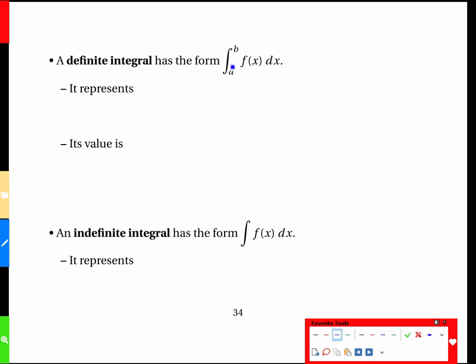So the definite integral has the form with the limits here, that's important, the a and the b, and it represents an area between x equals a and x equals b, or it represents an accumulation, some specific amount of a total change. It's a quantity. It's a number.